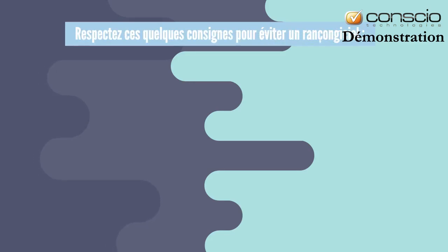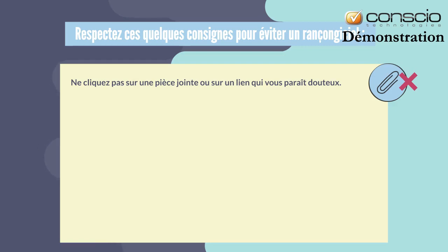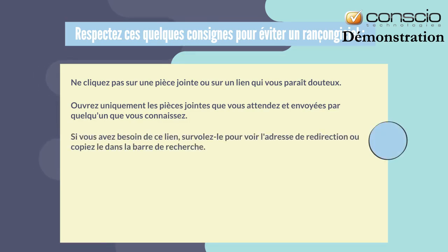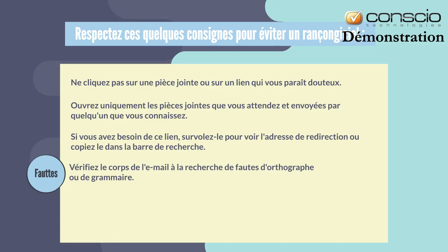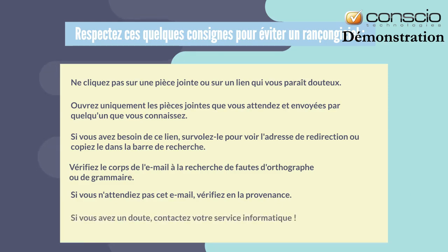Respectez ces quelques consignes pour éviter un rançongiciel. Ne cliquez pas sur une pièce jointe ou sur un lien qui vous paraît douteux. Ouvrez uniquement les pièces jointes que vous attendez et envoyées par quelqu'un que vous connaissez. Si vous avez besoin de ce lien, survolez-le pour voir l'adresse de redirection ou copiez-le dans la barre de recherche. Vérifiez le corps de l'email à la recherche de fautes d'orthographe ou de grammaire. Si vous n'attendiez pas cet email, vérifiez-en la provenance. Si vous avez un doute, contactez votre service informatique.